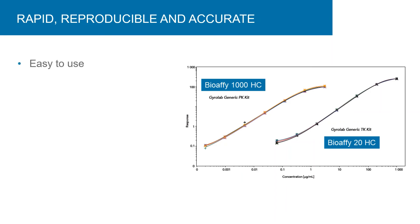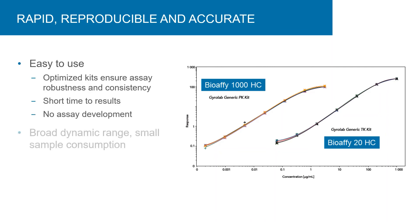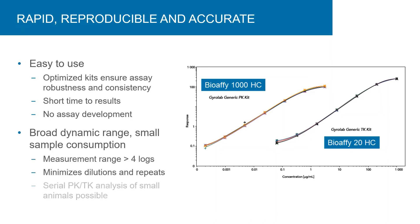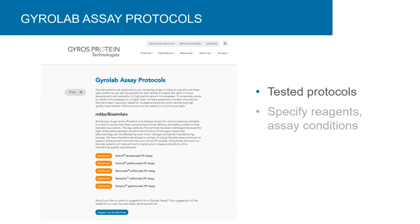Gyrolab immunoassay kits are ready to run and eliminate the need for assay development, producing rapid, reproducible, and accurate results. PK-TK assays were run using the 1000 BioAffy CD and 20HC BioAffy CD, and the standard curves for six separate runs are superimposed. The choice of 20HC and 1000 CDs extends the assay dynamic range beyond four logs. Ready-to-use and robust Gyrolab PK assay protocols are also available for download on the Gyros Protein Technologies website to accelerate development of biosimilars.